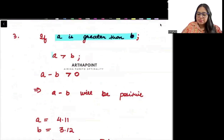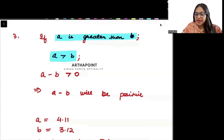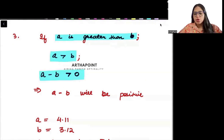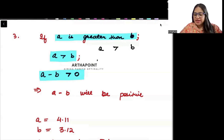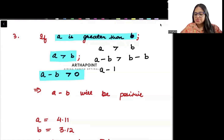Next point: if a is greater than b, then a minus b will be greater than 0. If a is greater than b, I can subtract b from both sides, and a minus b will be greater than 0.